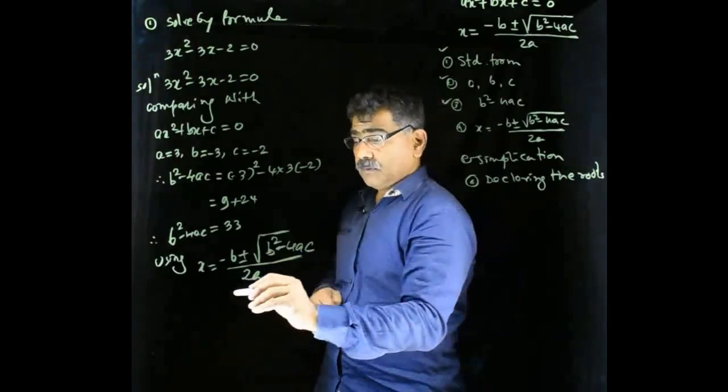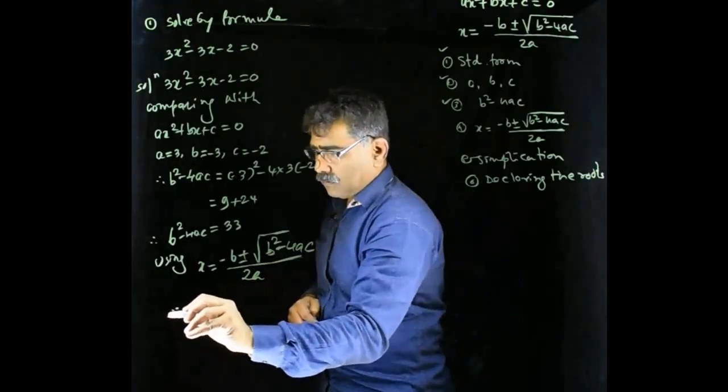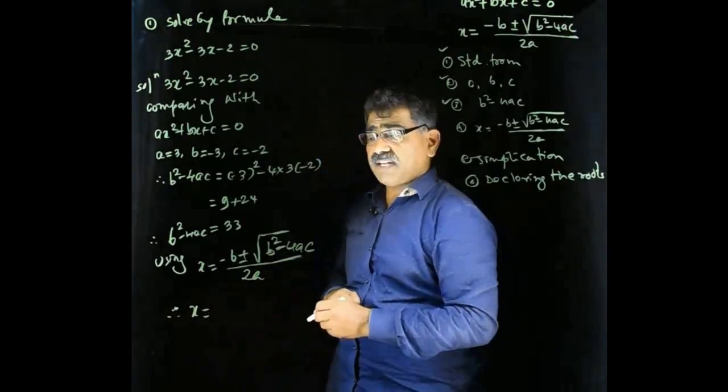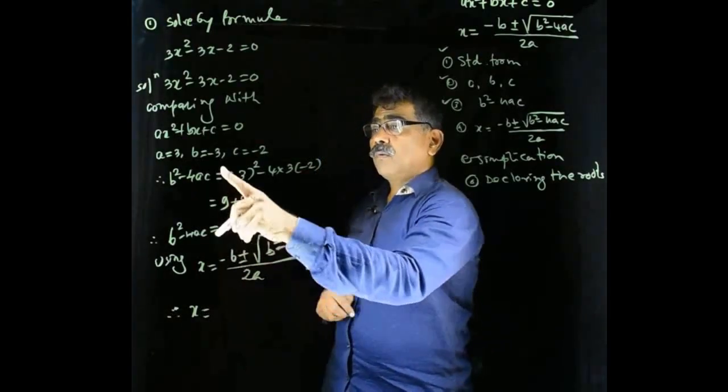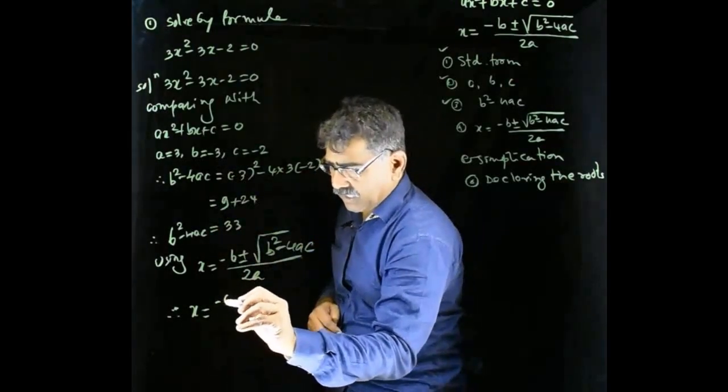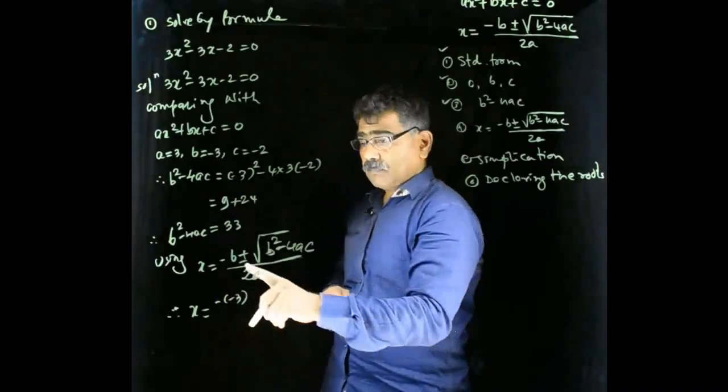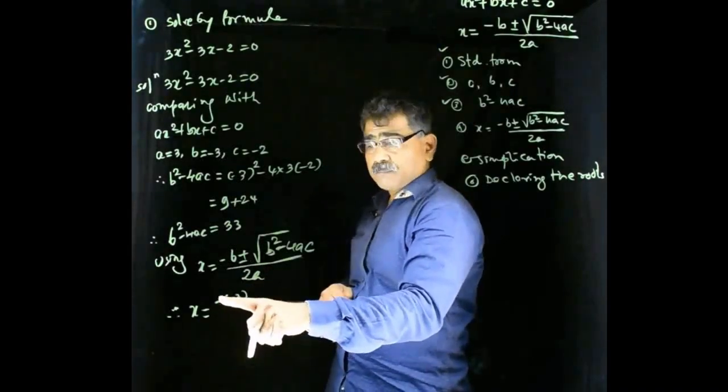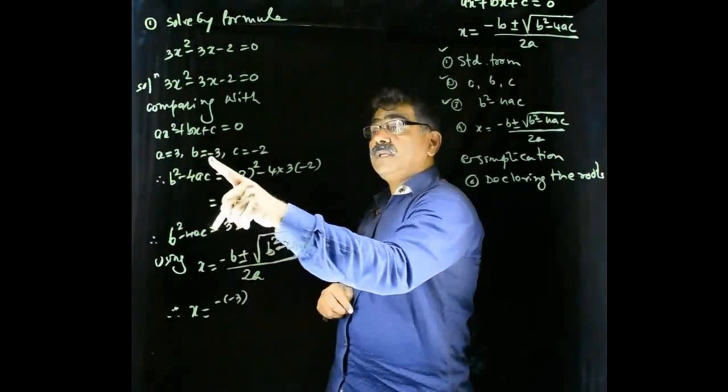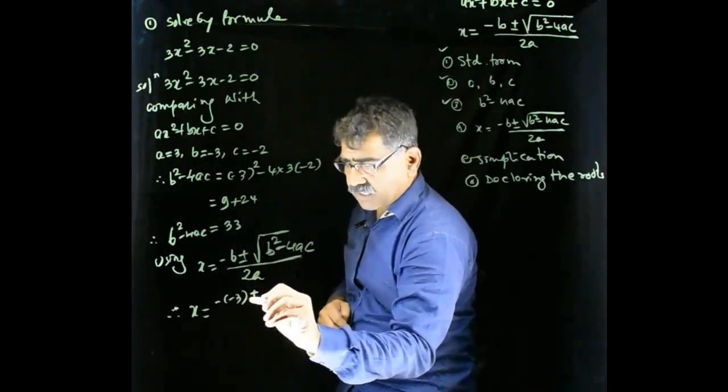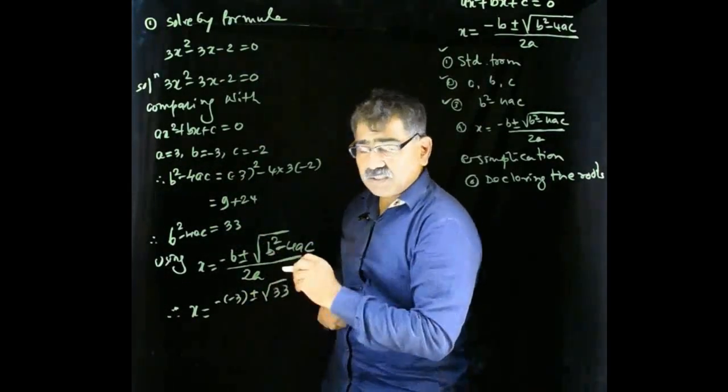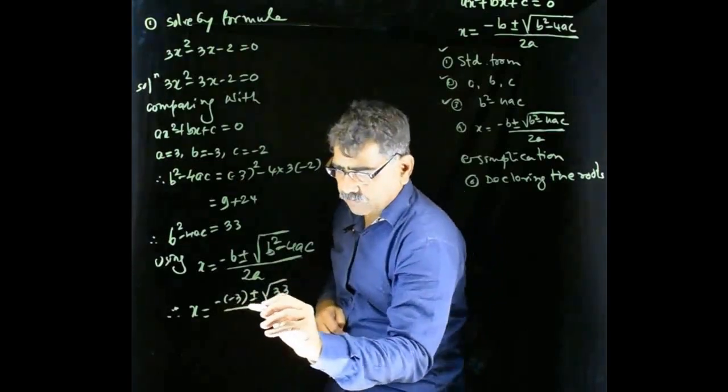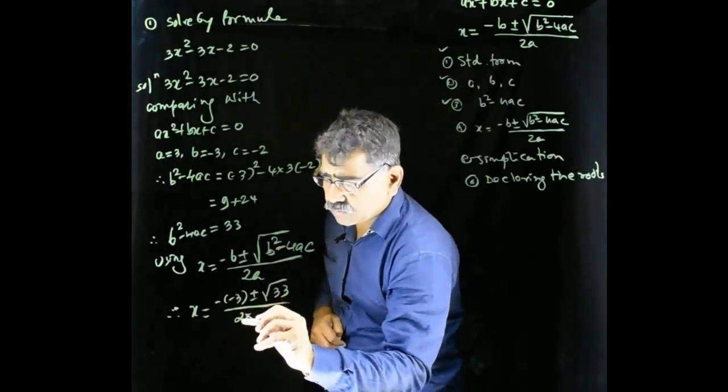Now, therefore, x is equal to, what is negative b? It is negative 3. Negative of negative, this negative is for formula and this negative is for b. Positive or negative, positive or negative, under root 33 divided by 2 into a, a is again 3.